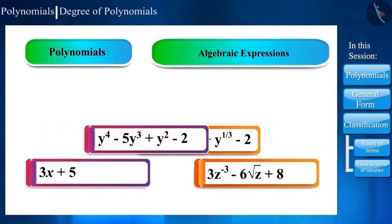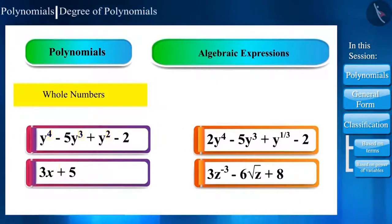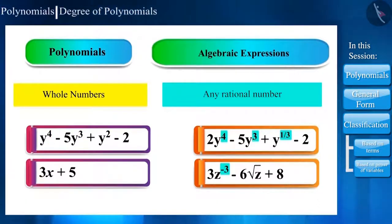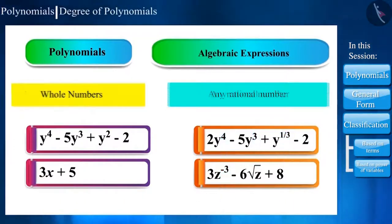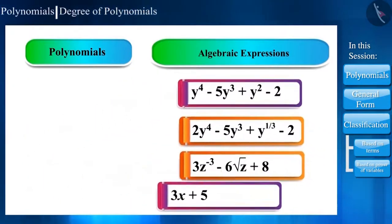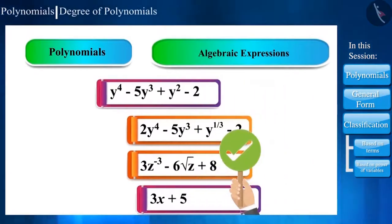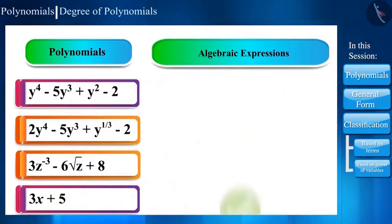The only difference between polynomials and expressions is that the power of variables in polynomials is always a whole number, whereas the power of variables in expressions can be any number. We have to focus on one thing: all polynomials are expressions, but not all expressions are polynomials.